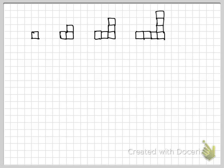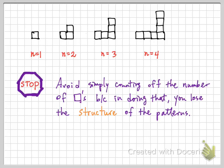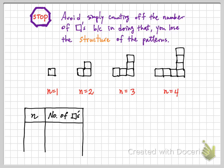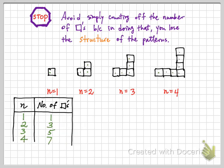In order to answer the ultimate question, we need to explain how the patterns change from one to the next verbally. If we label the first pattern as n equals 1, the second as n equals 2, and so on, you want to avoid simply counting the number of squares, because by doing that you lose information on the structure built into the problem. If you just counted: n=1 gives 1 square, n=2 gives 3, n=3 gives 5, n=4 gives 7 — all we can see is that two more squares are added each time n increases by 1.